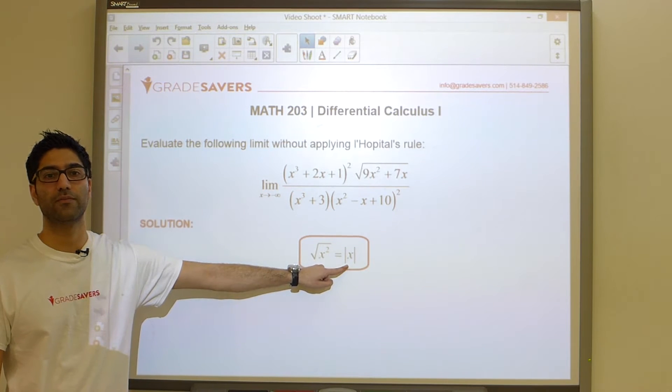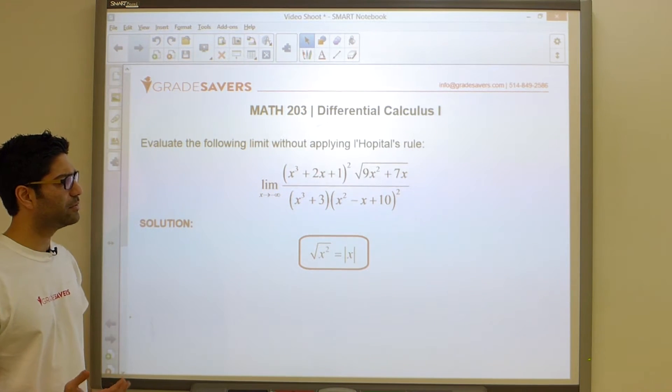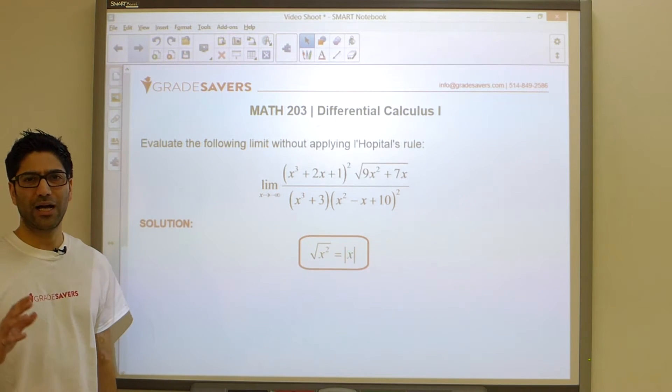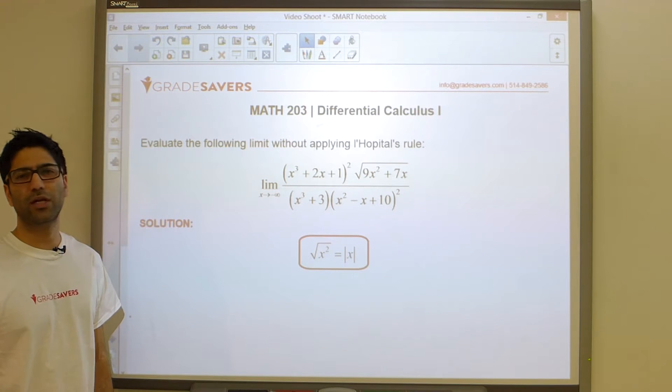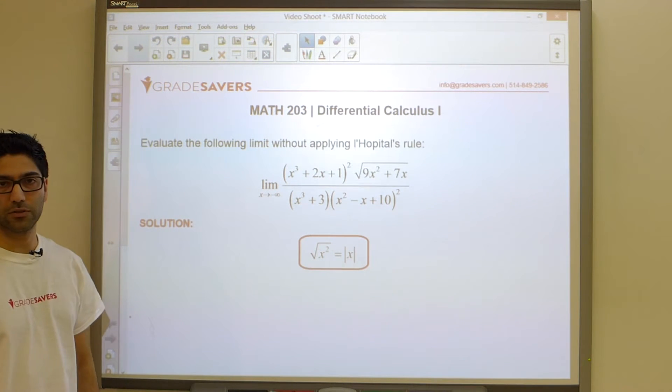And that is this: we need to be crystal clear about the fact that the square root of x squared is not x, but rather the absolute value of x. This is where they like to throw us off.